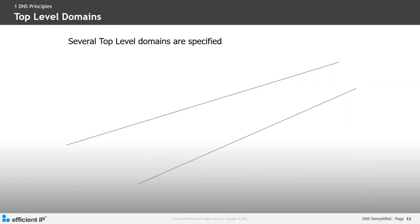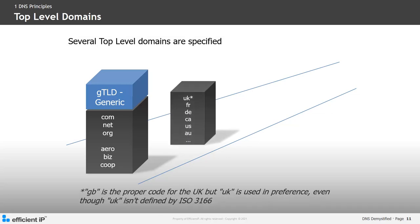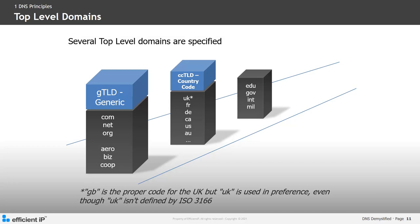There are several specific top-level domains. For example, .com, .net, .org, .aero, .biz, and .co-op are all examples of generic top-level domains. UK, FR, DE, CA, US, and AU are domains established for countries or territories. EDU, GOV, INTERNET, and MIL are all sponsored or special domains, sponsored by private agencies or organizations that have rules restricting eligibility into those domains. Last is the ARPA, which is the infrastructure for the top-level domain or reverse domain.